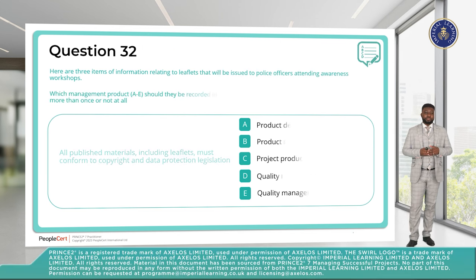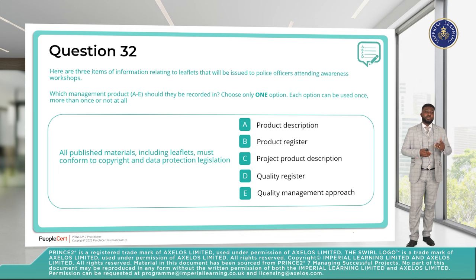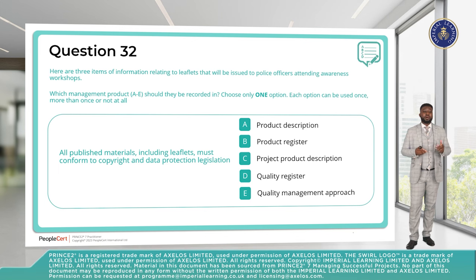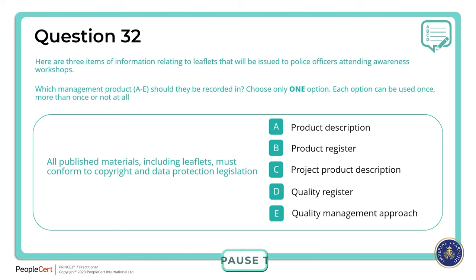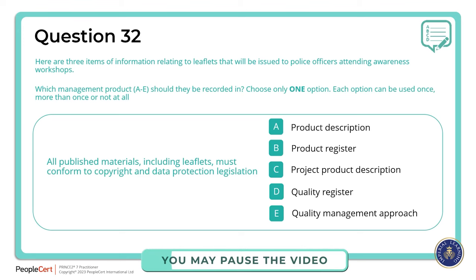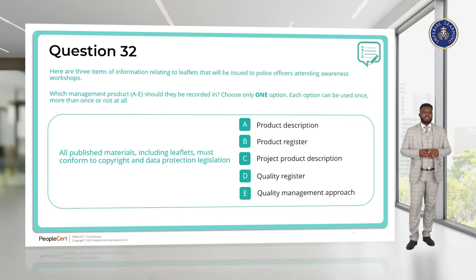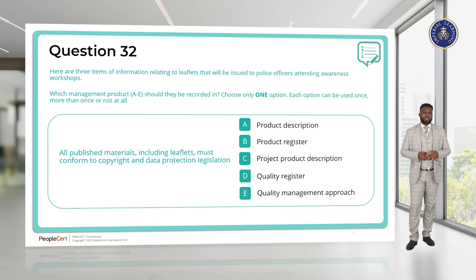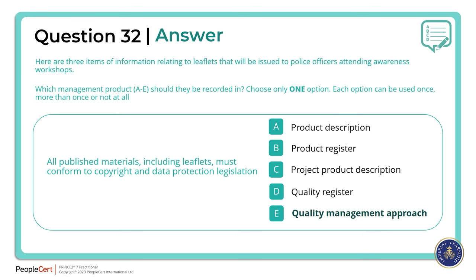Question 32. All published material including leaflets must conform to copyright and data protection legislation. This kind of overarching rule that the organisation must comply with — such as GDPR conformance — will be recorded in the quality management approach. The answer is E, quality management approach.